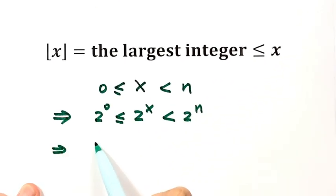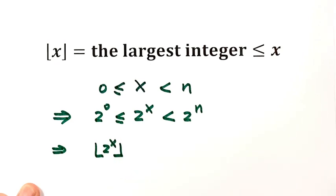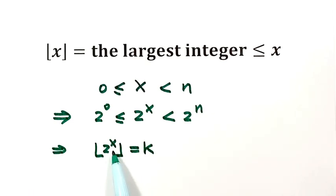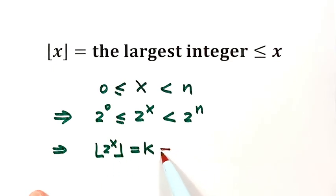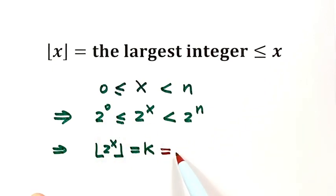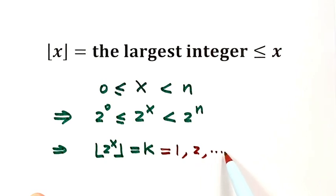For the floor of 2 to the x, we can use k for this floor function. Because the floor of 2 to the x is just the largest integer less than or equal to 2 to the x. So the k value starts from 2 to the power 0, that's just 1, then 2, then up to 2 to the power n minus 1.